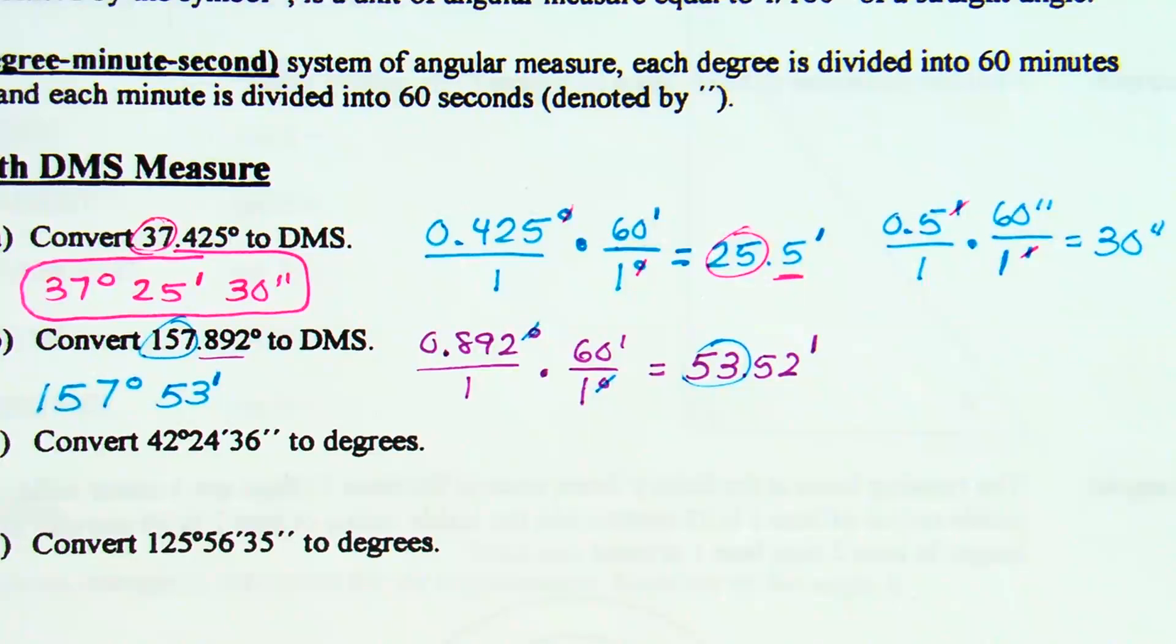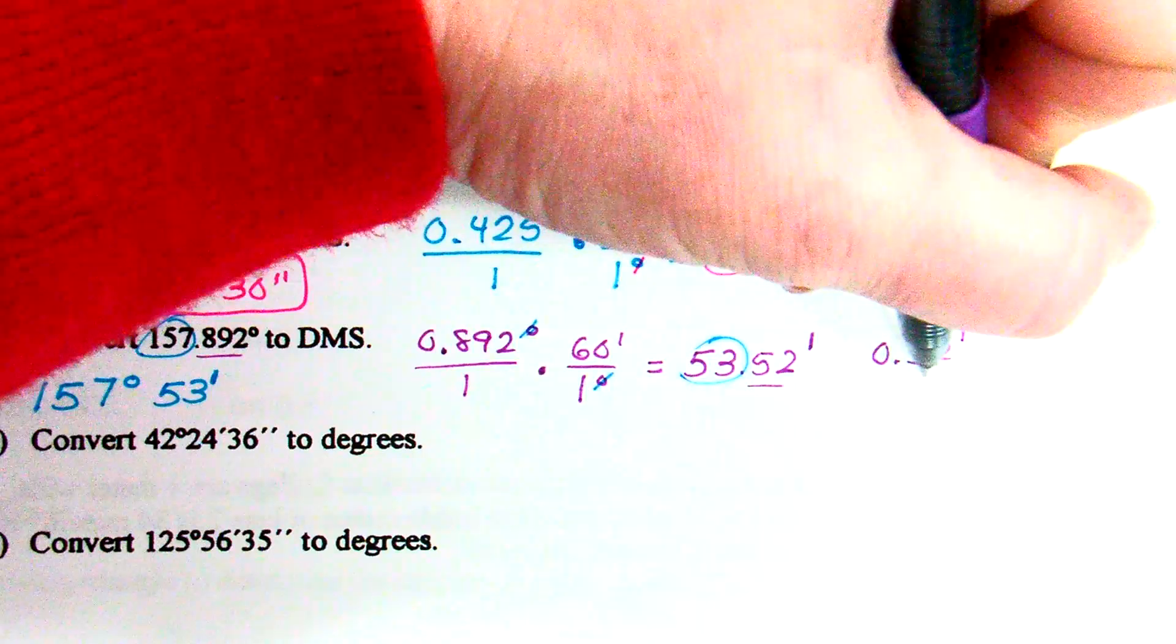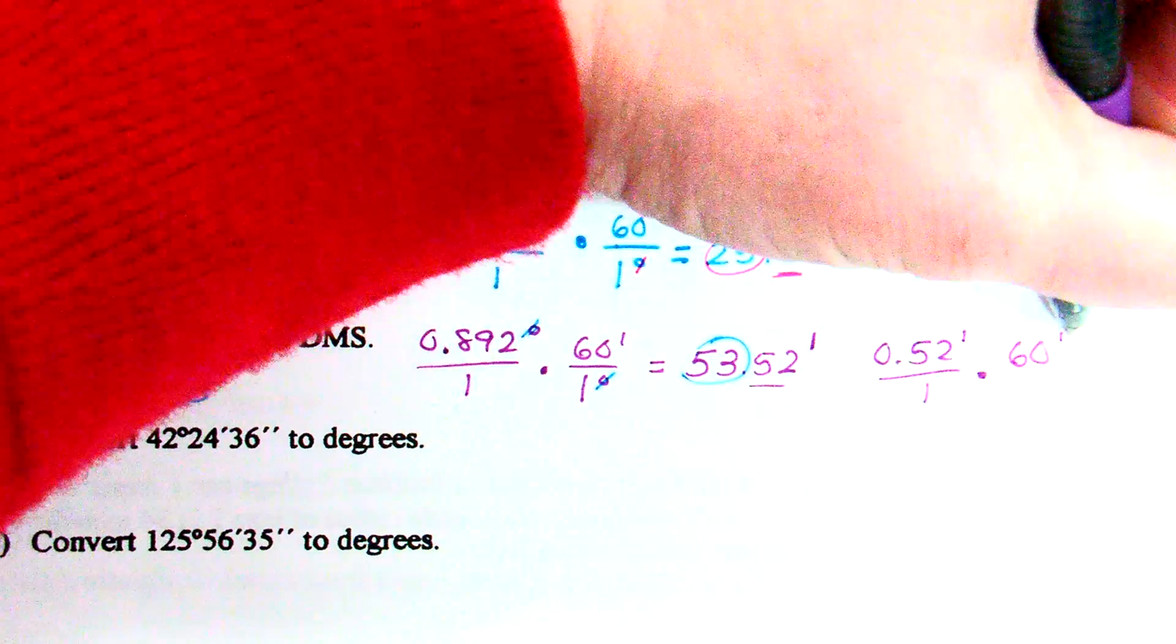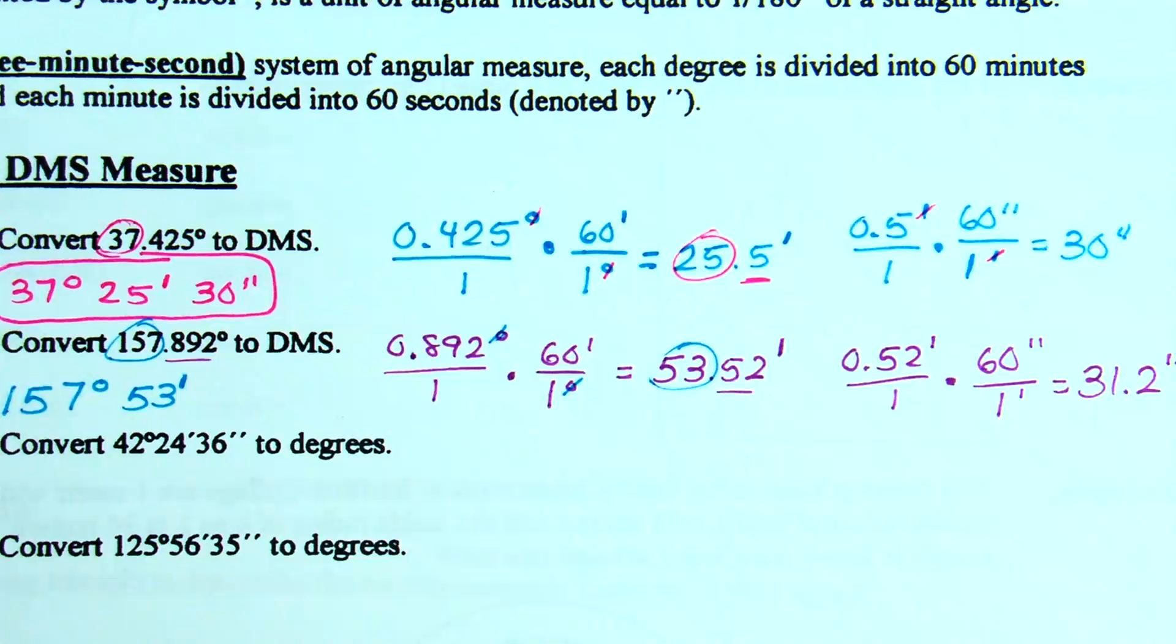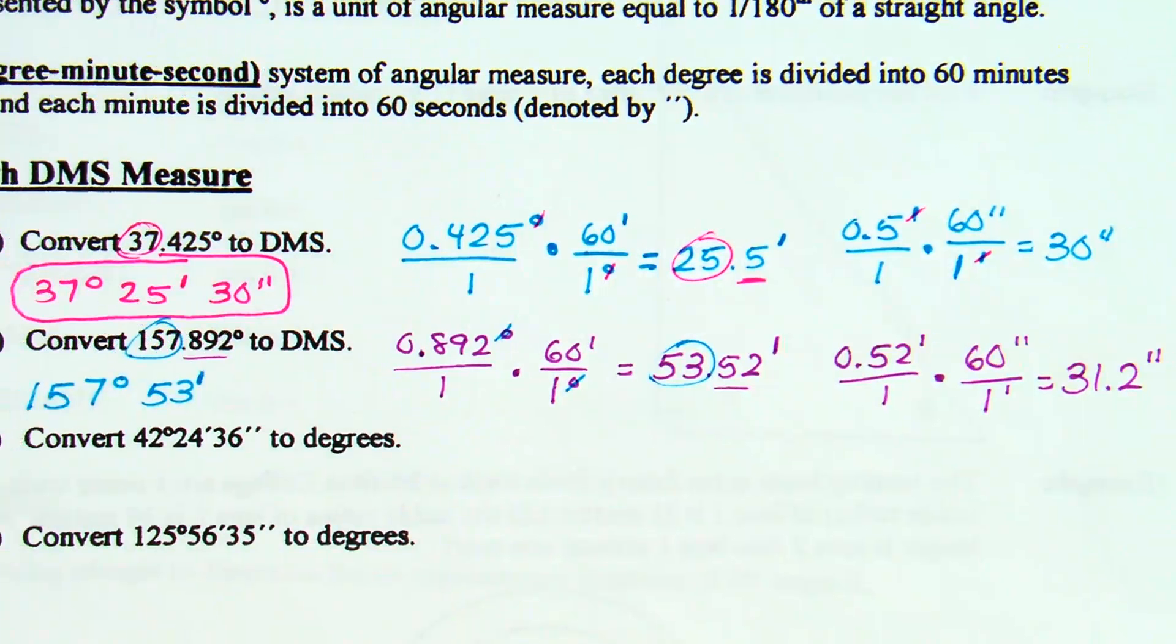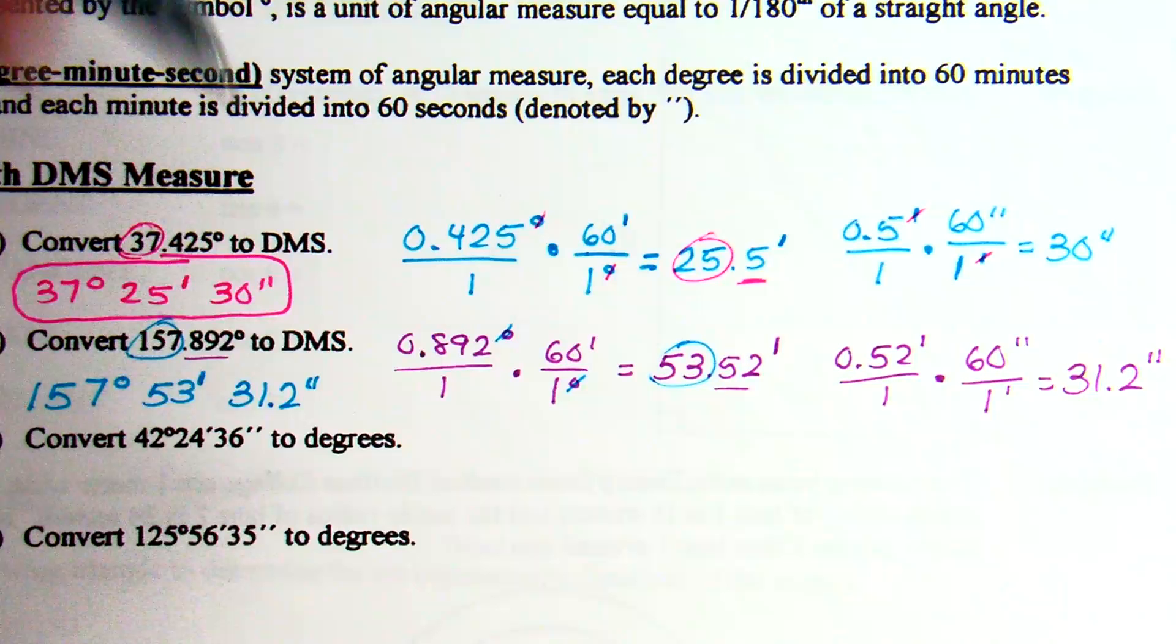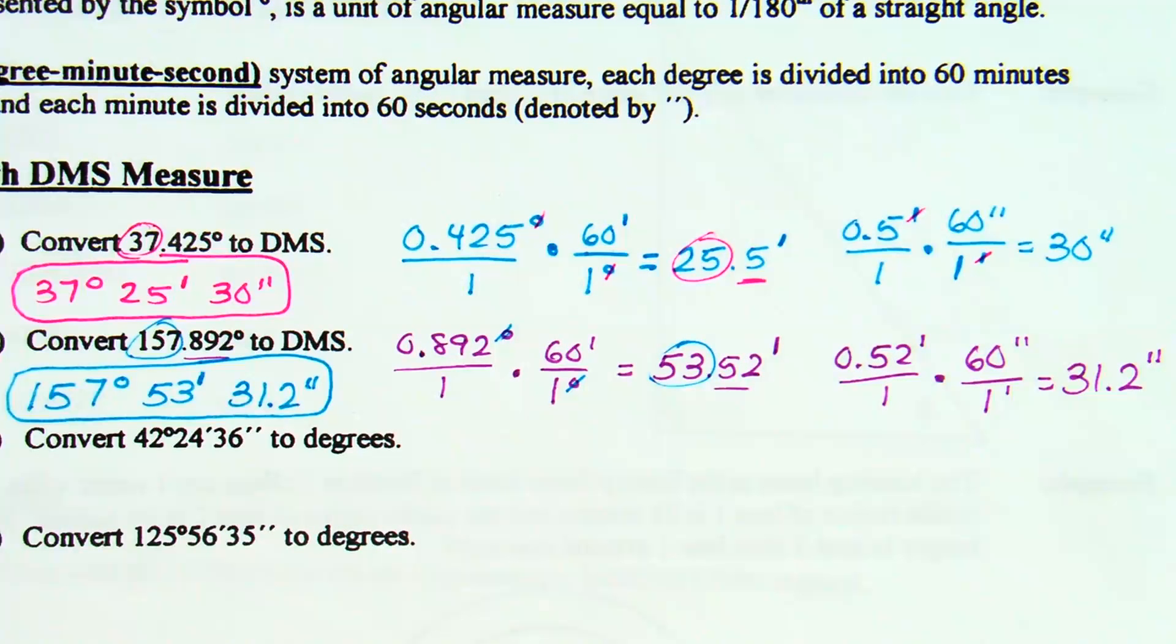Now, this is why I gave you the technique last time, because you know how many seconds that is? Not quite as obvious this time, is it? So what do I do? Take your remaining piece here, which is the 0.52 minutes, and multiply by the 60 seconds. 0.52 times 60 is 31.2, and that's going to be 31.2 seconds. Final answer? 156 degrees, 53 minutes, and 31.2 seconds. You could probably also get away with saying 31 seconds.